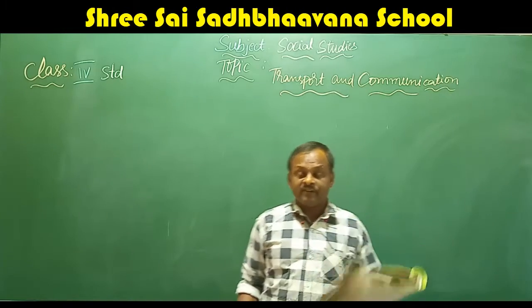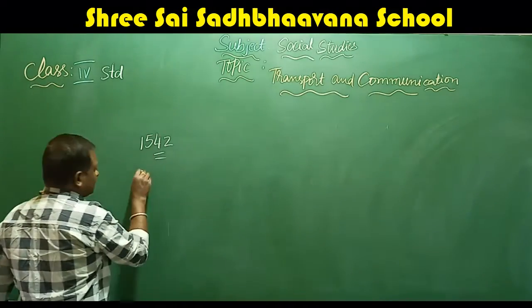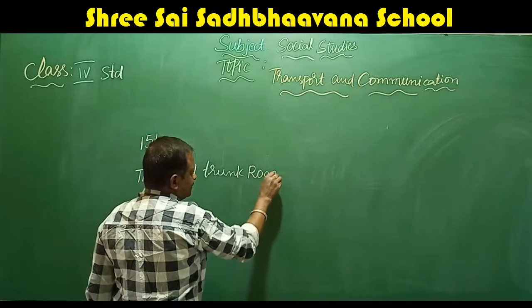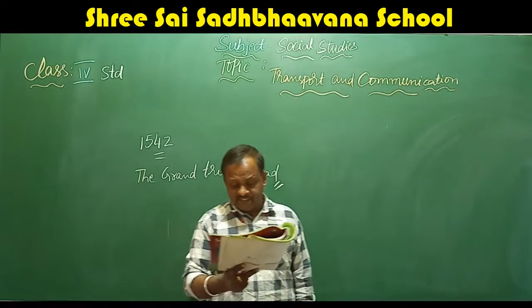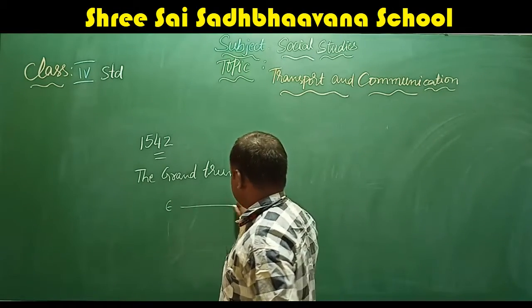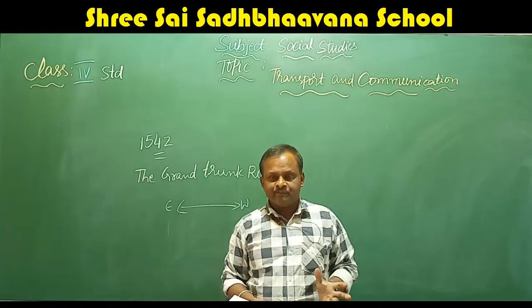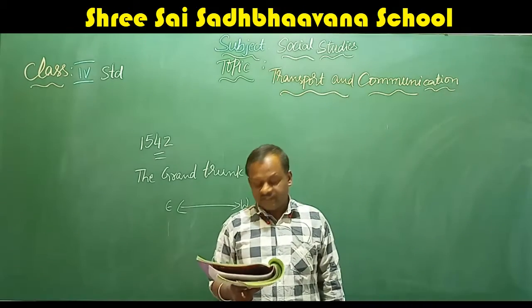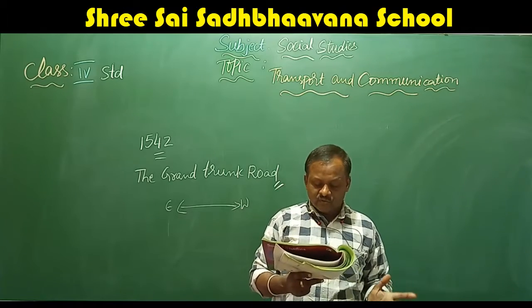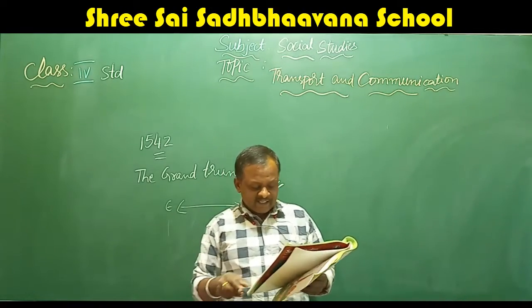The Grand Trunk Road was built by Emperor Sher Shah Suri in 1542. In the year 1542 itself, they constructed this big road. It connects the eastern and western regions of the Indian subcontinent — from east to west. It runs from West Bengal across North India into Peshawar in Pakistan. The Grand Trunk Road also leads to Afghanistan through Khyber Pass and to Iran through Bolan Pass — so many countries are connected by this road.